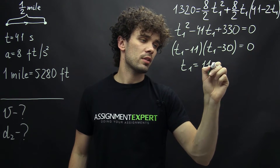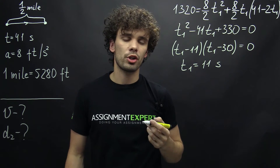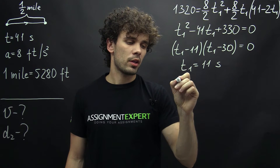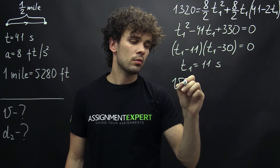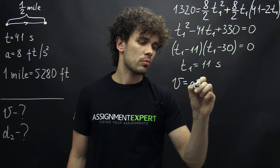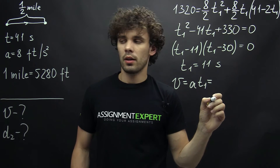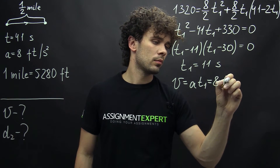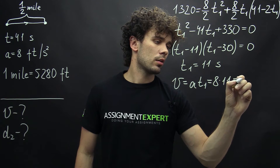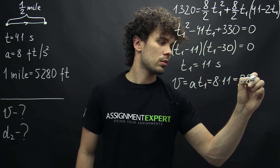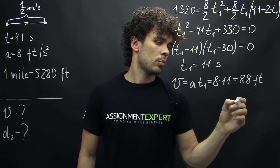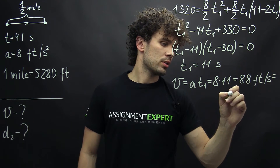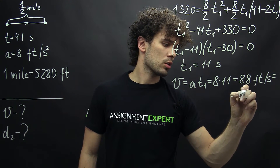So 11 seconds is the time needed to reach max speed. Knowing this, we can find the speed from the equation V equals A times T1. This is 8 times 11, which gives us 88 feet per second, or equivalently 60 miles per hour.